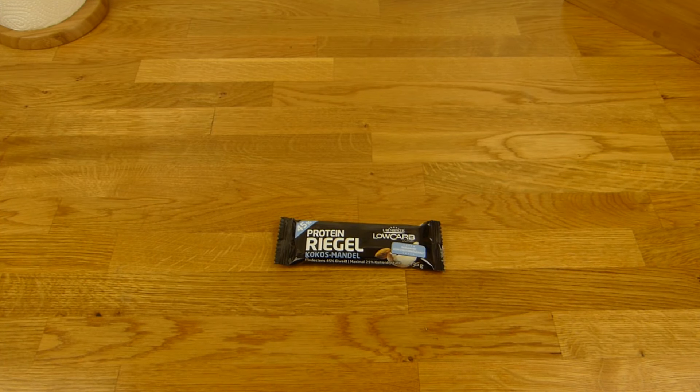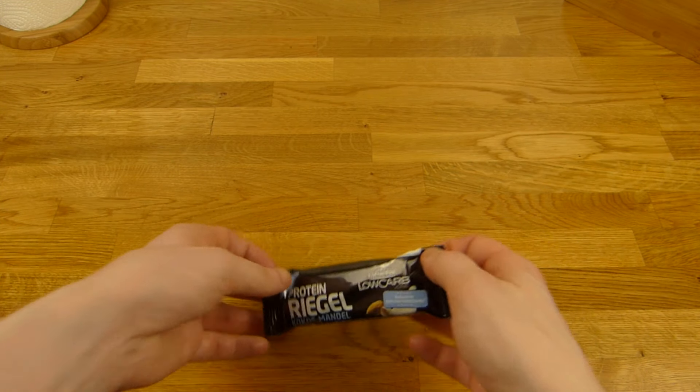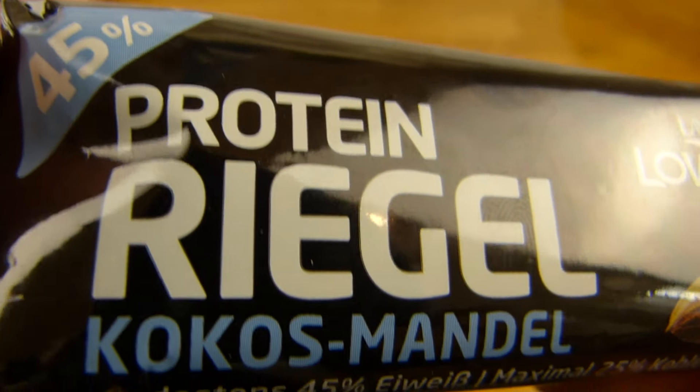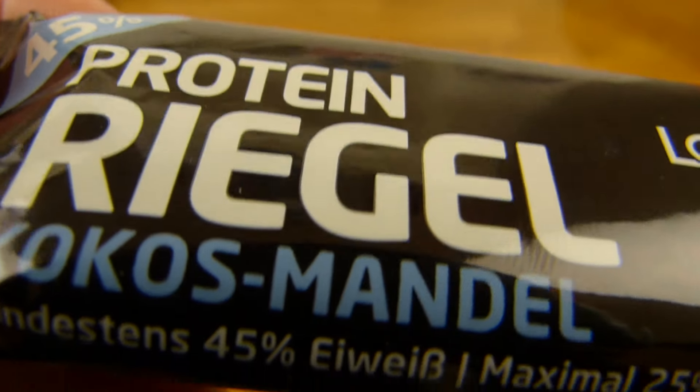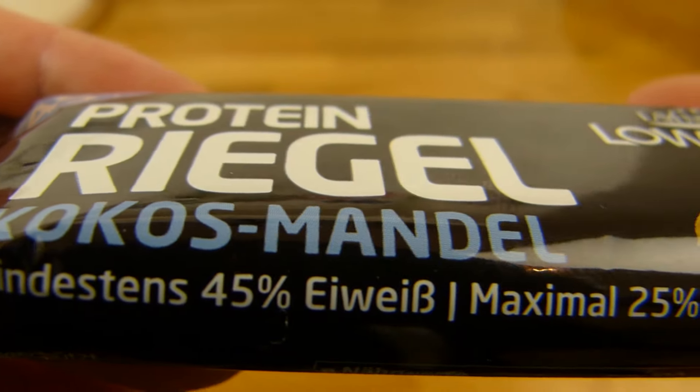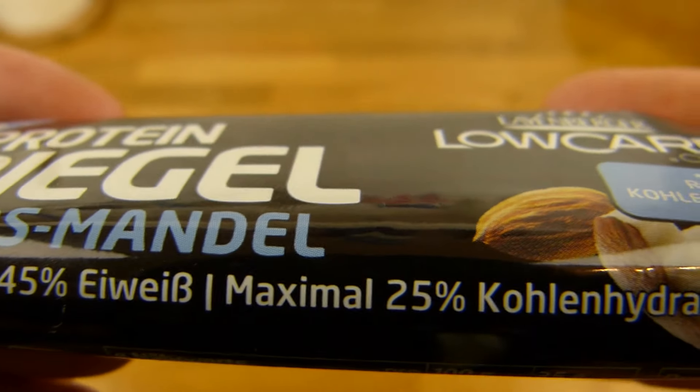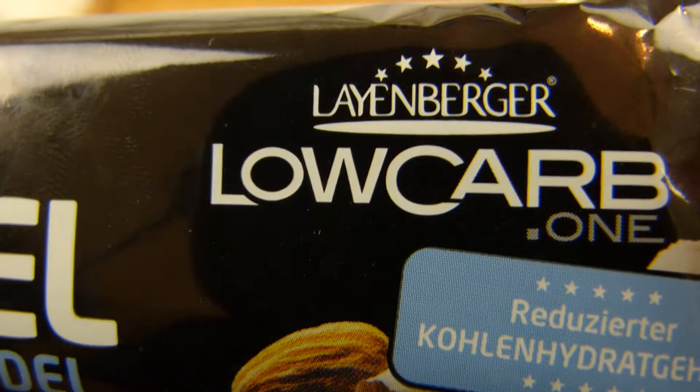Welcome back to another German food review and it's protein bar time. Proteinriegel, so protein bar, coconut and almond and 45% of protein and max 25% of carbs.